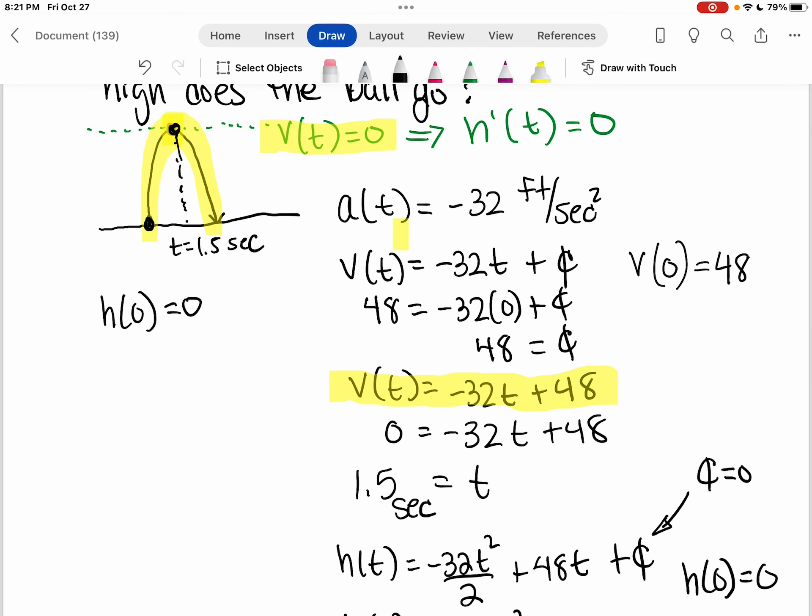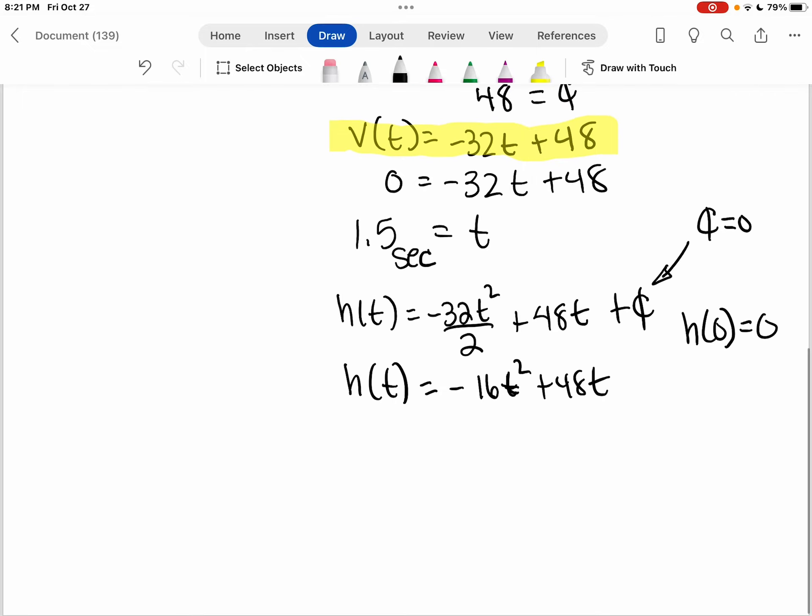So because now I want to find the height at 1.5 seconds, that will give me my maximum height. I'm going to plug in 1.5 into the height function and I'm going to get out that the maximum height is at 36 feet.